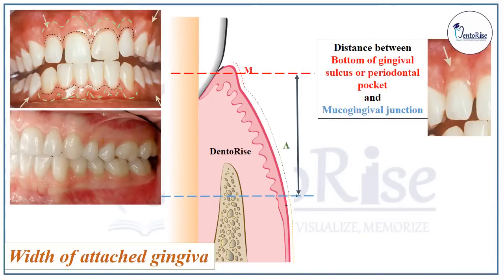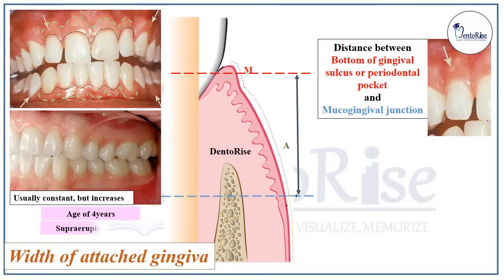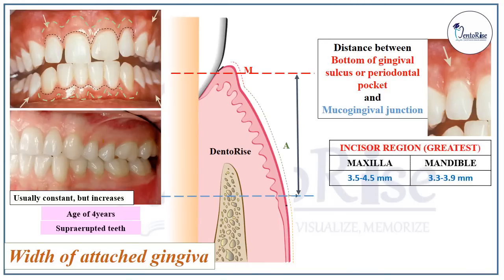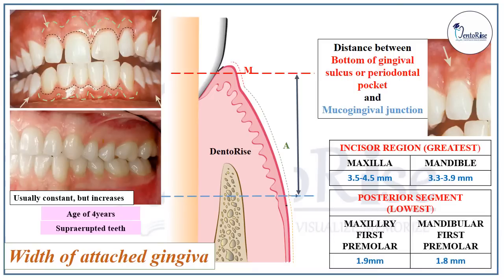The width of attached gingiva is usually constant but increases around age 4 or in cases of supra-erupted teeth. Numerically, in the incisor region, it is the greatest: in the maxilla roughly 3.5–4.5 mm, and in the mandible 3.3–3.9 mm. In the posterior segment, the width is the lowest: in the maxillary first premolar it is roughly 1.9 mm, and in the mandibular first premolar roughly 1.8 mm. These numerical values are important from both the clinical and examination points of view.